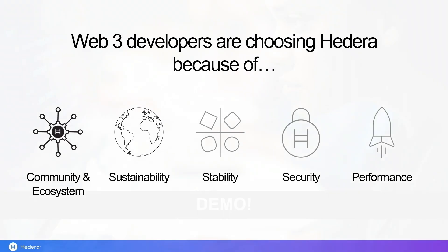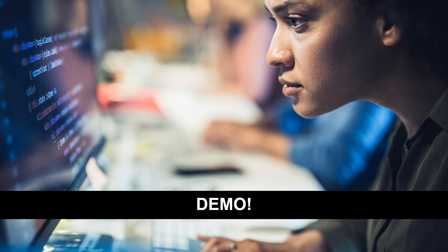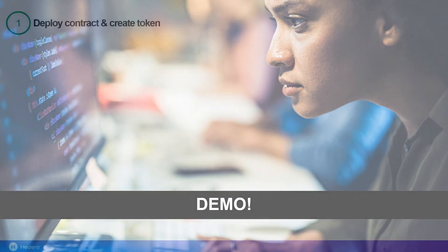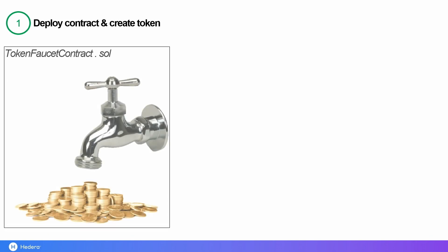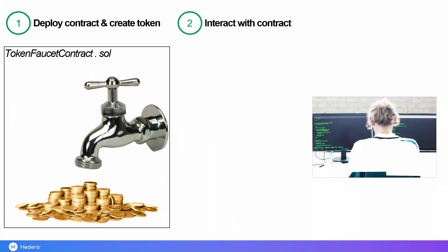So that's the why for these teams. If we look at the how, let's take a brief look at the demo. We're going to look at three key steps. First, we're going to deploy a contract and then create a token — the contract is going to serve as a faucet for our fungible token, and this is going to be a native Hedera token. Then once that contract is deployed and our token created, anyone can interact with our contract by calling the contract's pay5HBAR function. HBAR, by the way, is the native cryptocurrency of the network.